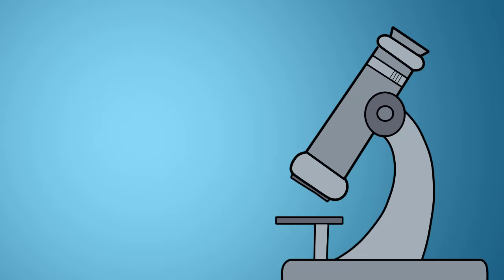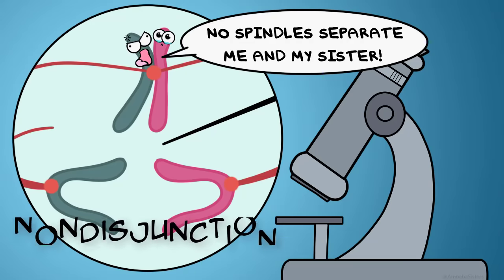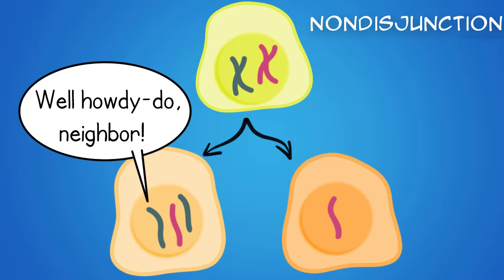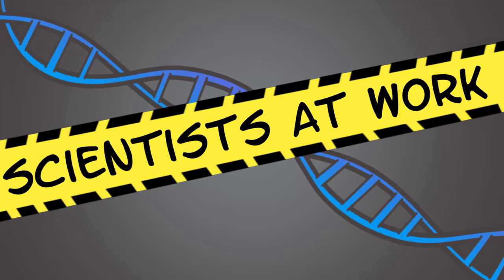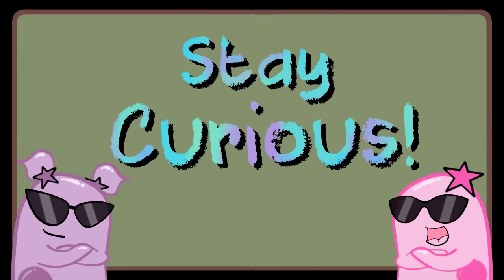One last thing to think about: scientists often study meiosis because sometimes chromosomes don't separate correctly. It's called non-disjunction when a cell receives too many or too few chromosomes during separation. This contributes to some genetic disorders, which is something scientists continue to study. That's it for the Amoeba Sisters — stay curious.